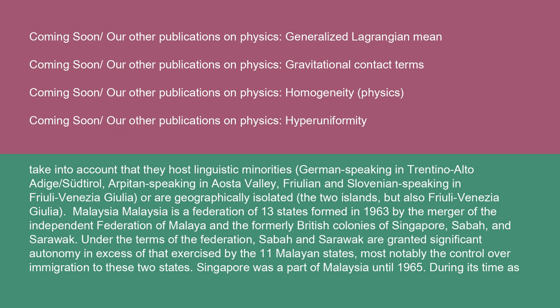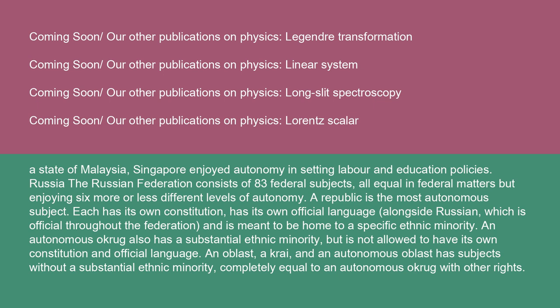Malaysia: Malaysia is a federation of 13 states formed in 1963 by the merger of the independent Federation of Malaya and the formerly British colonies of Singapore, Sabah, and Sarawak. Under the terms of the federation, Sabah and Sarawak are granted significant autonomy in excess of that exercised by the 11 Malayan states, most notably the control over immigration to these two states. Singapore was a part of Malaysia until 1965. During its time as a state of Malaysia, Singapore enjoyed autonomy in setting labor and education policies.